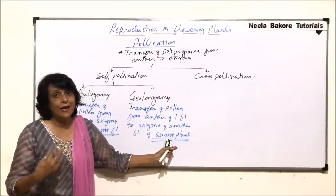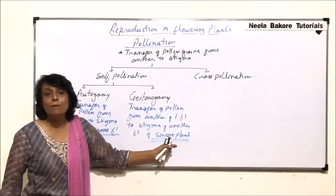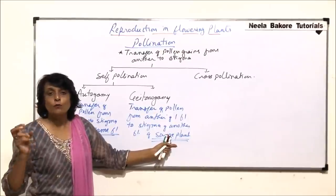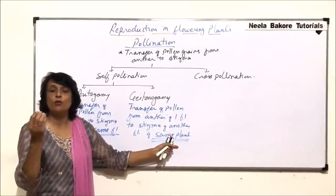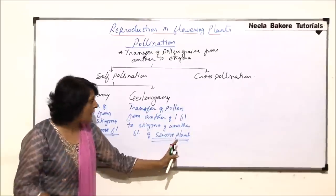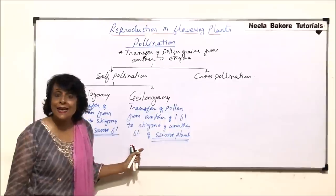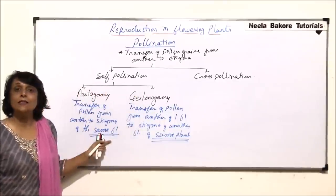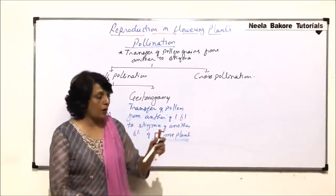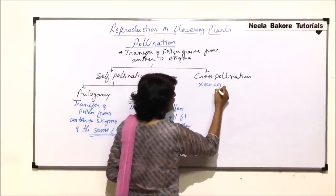One possibility is that the same plant has bisexual flowers, so one flower's anther produces pollen which transfers to the stigma of another flower on the same plant. Another situation is that the plant may have unisexual flowers — the male flower produces pollen which transfers to the female flower on the same plant. Both cases are termed self-pollination.